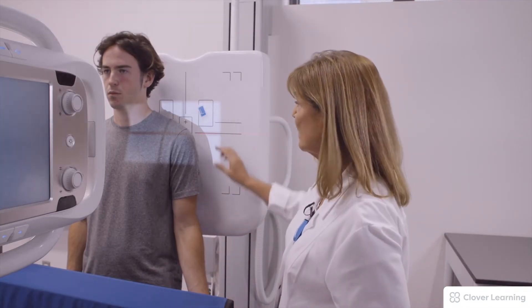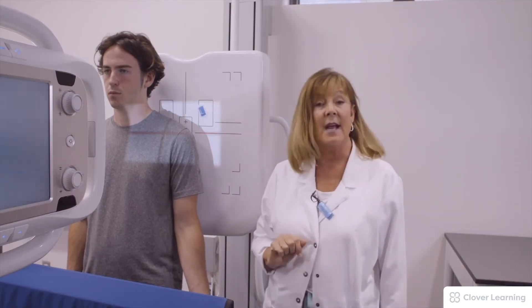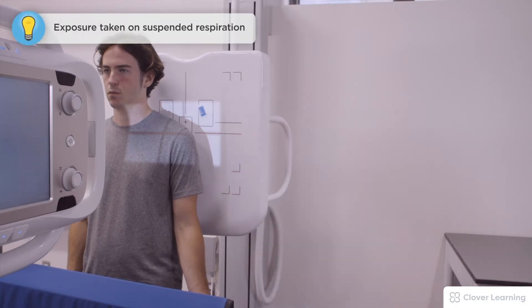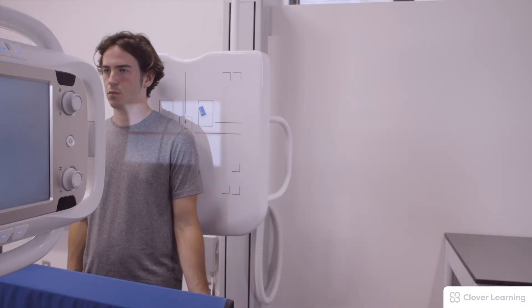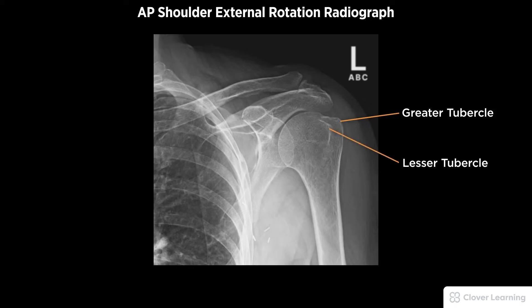This is the external rotation. I have a left marker on the left side of the body, and in this particular view you will see the greater tubercle and the exposure is taken. A diagnostic AP shoulder external rotation radiograph must be free of motion. Demonstrated anatomy to include the greater tubercle in profile and lesser tubercle demonstrated between the humeral head and the greater tubercle with proper visualization of bony detail.